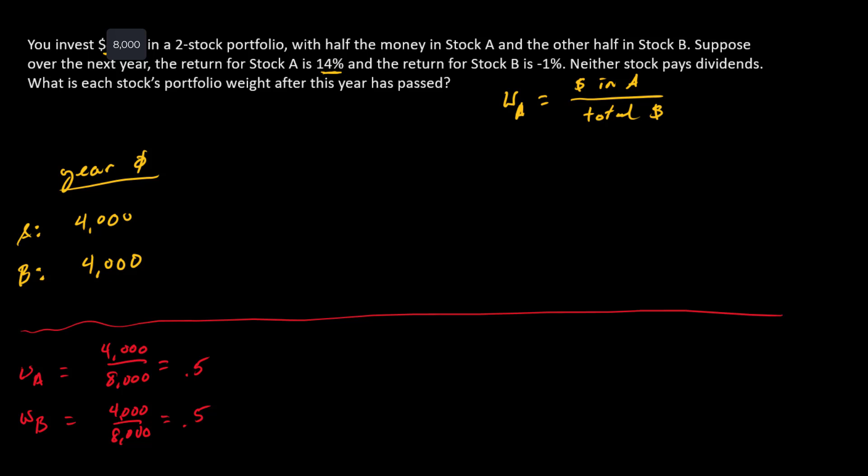Let's think about what happens in year one. Over year one, we've got a return of 14% for stock A and a return of -1% for stock B. To see what happens to the investment, we're going to multiply.